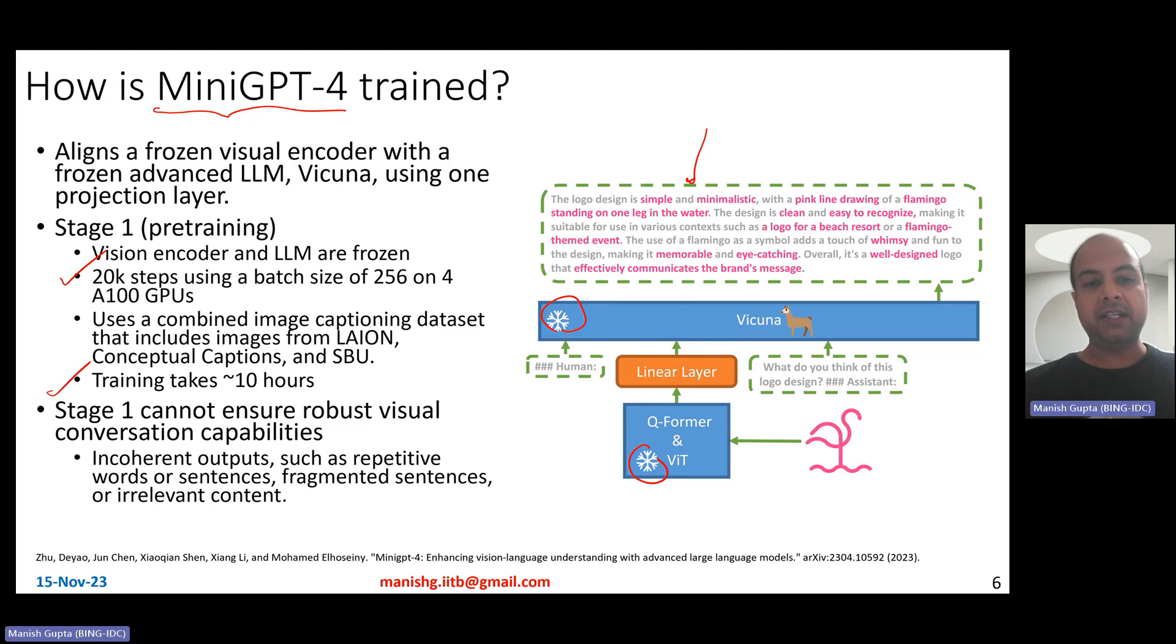And what do you pre-train on? Well, you pre-train on image captioning data. So you use a combination of image captioning datasets, three different datasets that they took: Lion dataset, Conceptual Captions dataset, and SBU dataset. These popular three datasets in the image captioning world, they take them, run them for 10 hours on four A100 GPUs, and your pre-training is done. So you would assume that this pre-trained model is really good at doing multimodal tasks, but that's not so. It cannot really do robust visual conversations. It cannot do conversations.